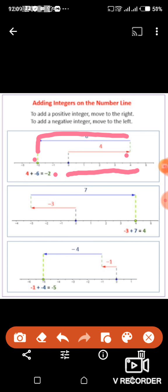In second one, minus 3 plus 7 is equal to 4. Minus 3 is the first number. So, we start at 0 and we proceed 3 units to the left. So, we reach at minus 3. And then plus 7. 7 is a positive number. So, from minus 3, we proceed 7 units to the right. So, we reach at 4. And 4 is the answer.